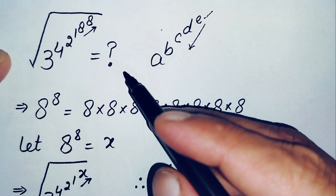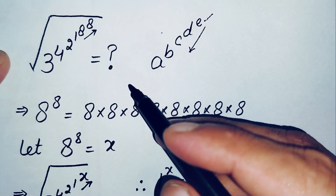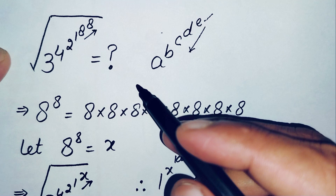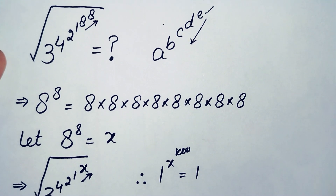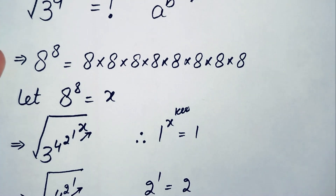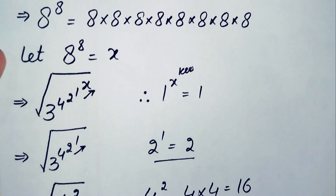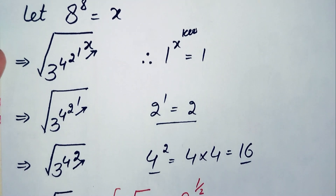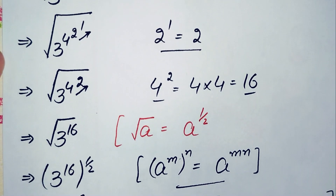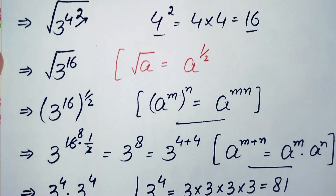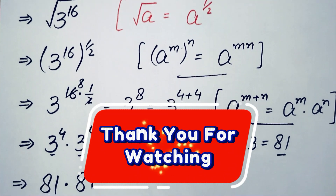So finally, 6561 is our answer to this nice and interesting square root math problem. If you like this video, don't forget to subscribe to my YouTube channel for more interesting and step-by-step math videos. Thanks for watching.